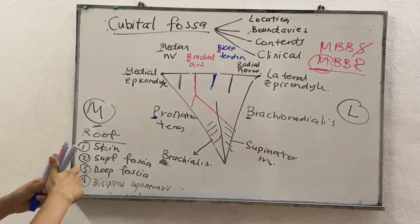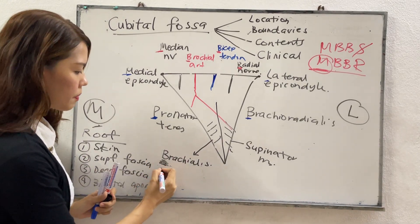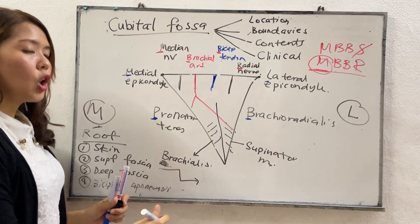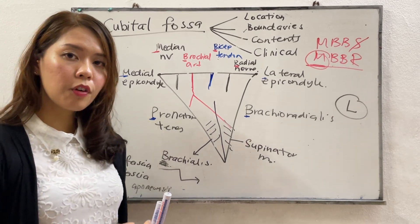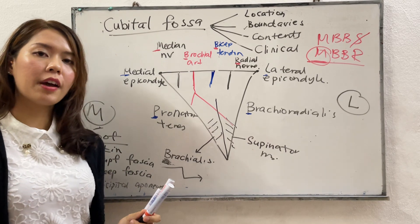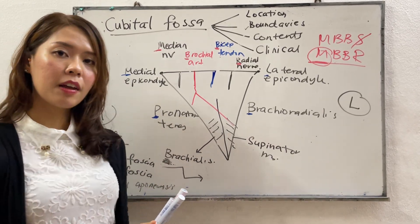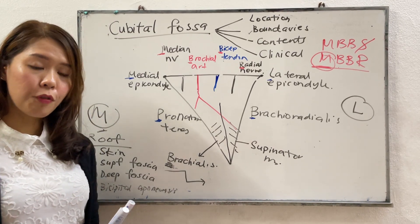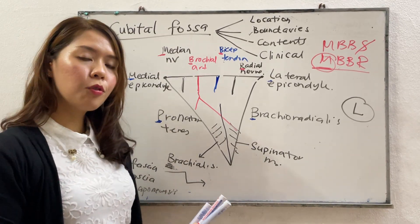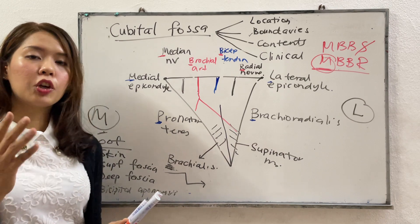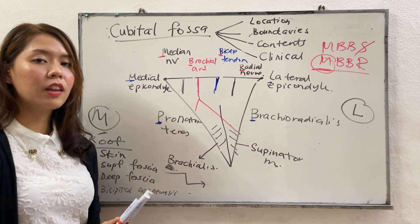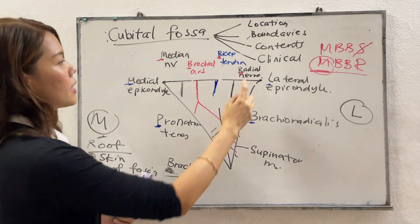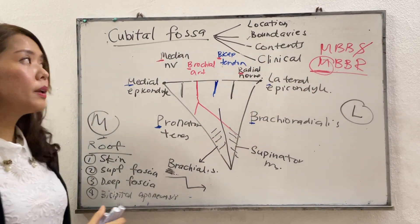In the superficial fascia, there are a few more structures — all your superficial veins, for example the cephalic vein, the basilic vein, and the median cubital vein. There are also two nerves: the medial cutaneous nerve of the forearm and the lateral cutaneous nerve of the forearm.